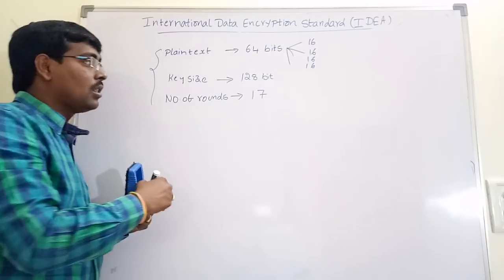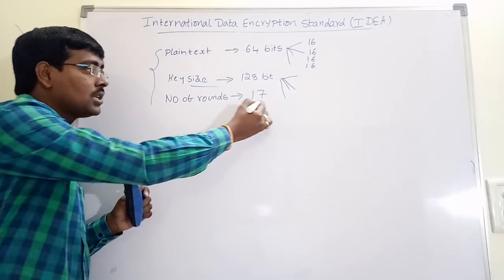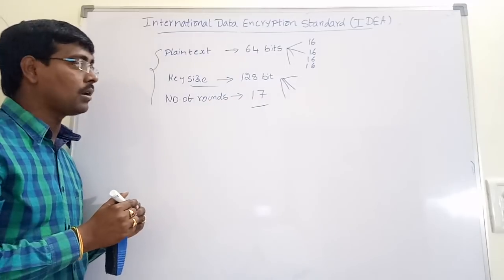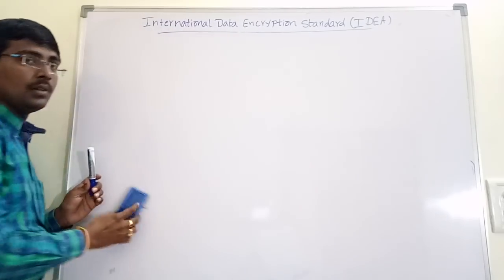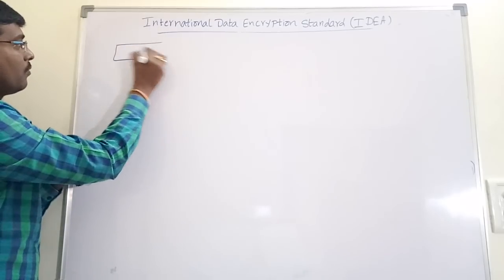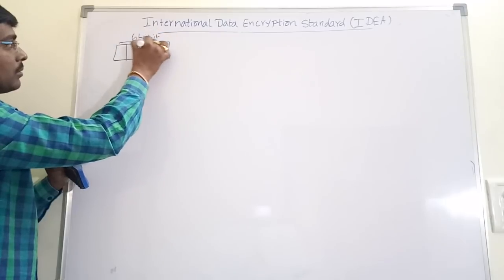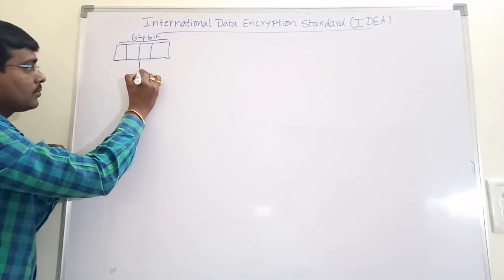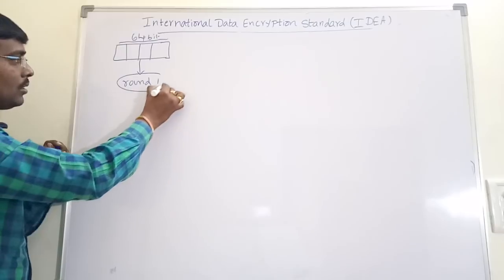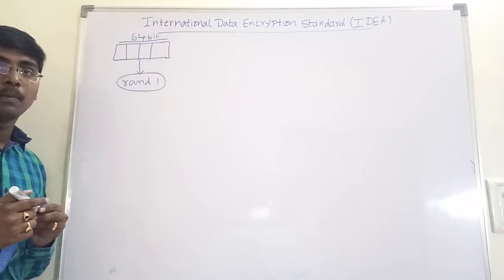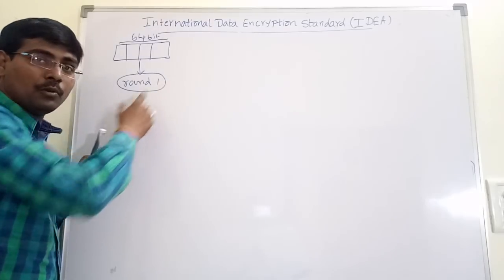This 128-bit key is divided into different sub-keys based on the number of rounds. The brief discussion of the IDEA algorithm: first, the plaintext is divided into 4 blocks of size 64 bits. Once the 4 blocks are formed, they are applied into Round 1 operation. For each round we have to take some input and produce some keys.